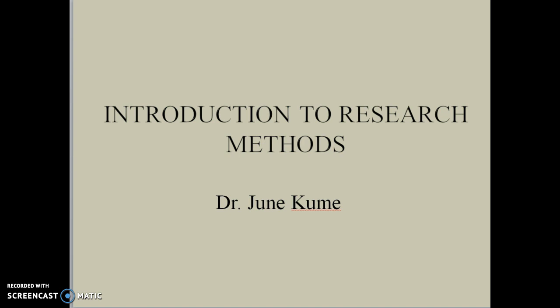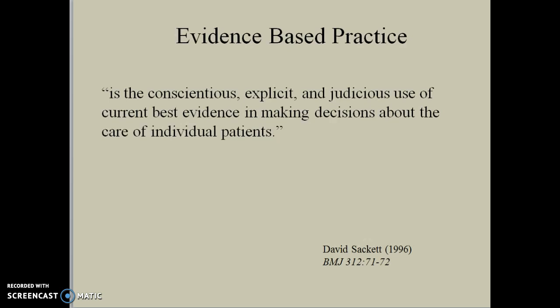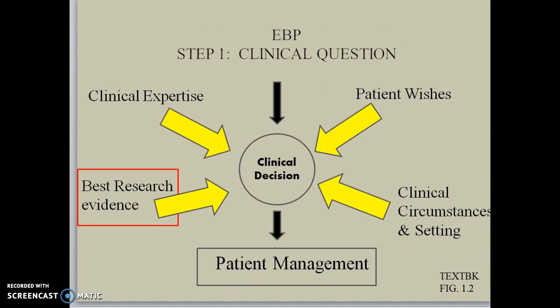The reason this is important is because one of the main tools that guide how healthcare professionals decide what to do with patients is through the use of something called evidence-based practice. Evidence-based practice, or EBP, was first defined by Dr. David Sackett in 1996 as the conscientious, explicit, and judicious use of the current best evidence in making decisions about the care of individual patients. To explain how research evidence from the literature fits into evidence-based practice, we can refer to a figure from Portney & Watkins' Foundation of Clinical Research textbook, which shows how EBP takes the clinical question and guides us through the clinical decision-making process for a final outcome of patient management, using four main considerations in our reasoning.